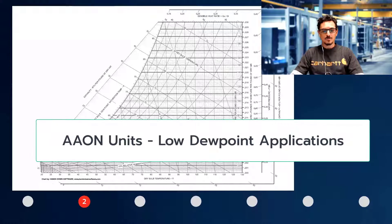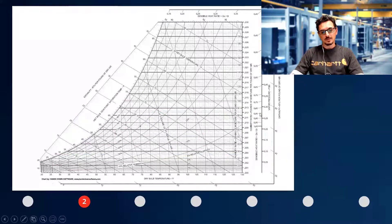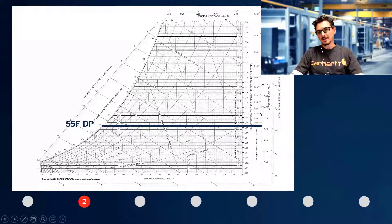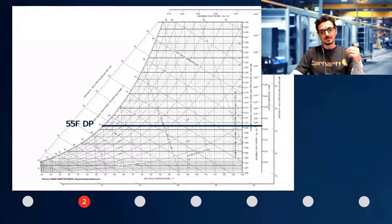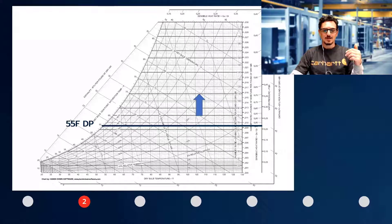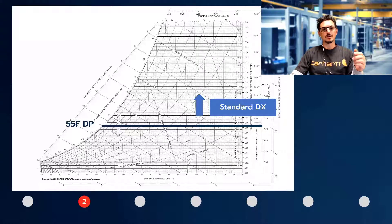So what do we mean by low dew point? We'll take a look at this psychrometric chart here. Personally, I cut off low dew point at 55 degrees — that's the space design conditions. Anything above 55 degree dew point, standard DX equipment will get you there most of the time.